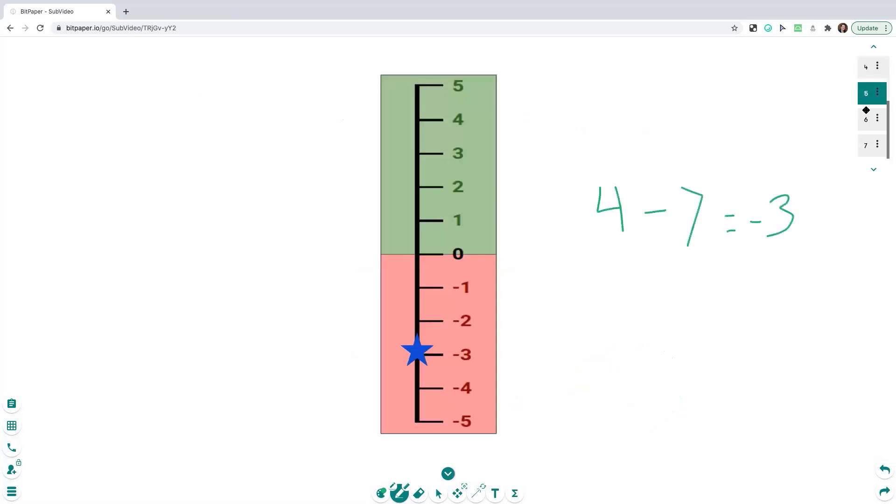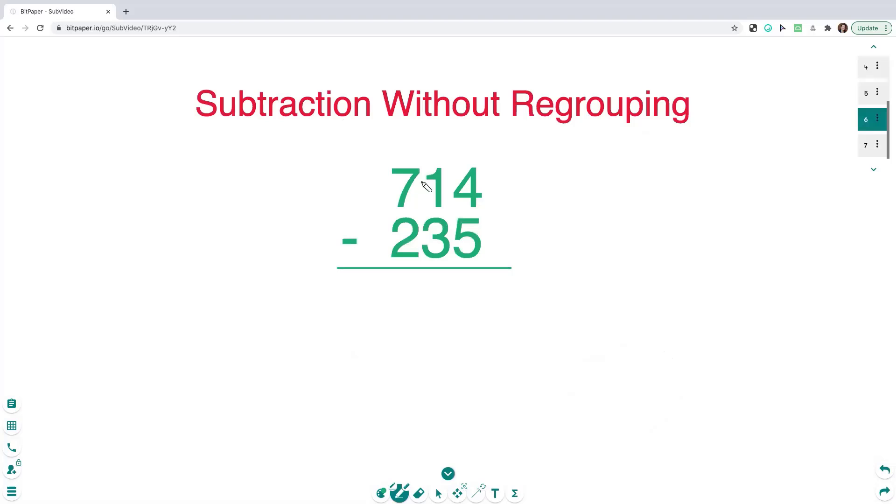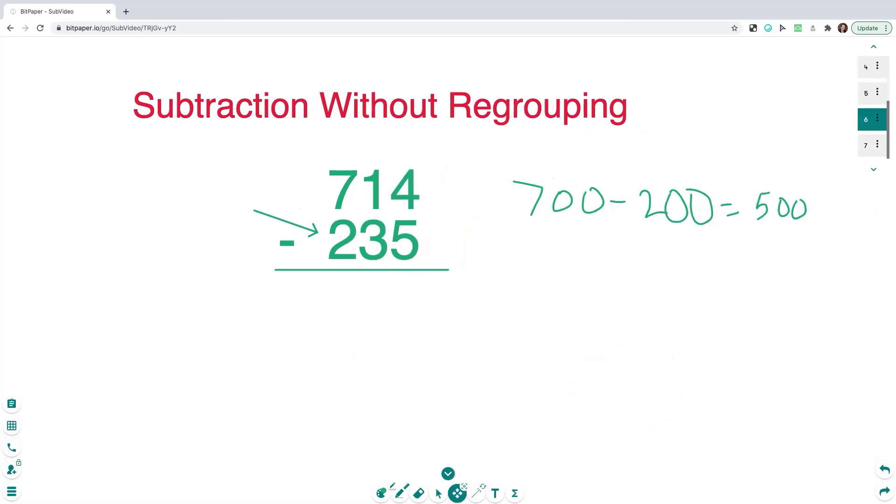Let's go ahead and do one more problem together. So next we have 714 minus 235. We're going to start over here in the hundreds place. This 7 is worth 700 minus 2 is worth 200. 700 minus 200 is 500.